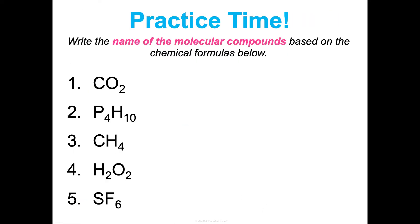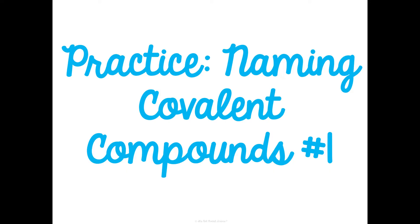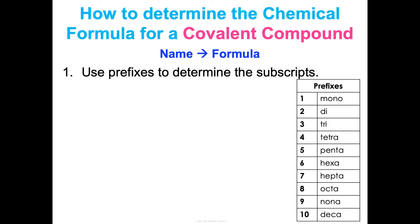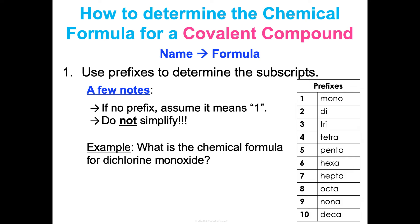I want you to try those, and then we'll go over them, and we'll do some more practice in class too. And then, just for the sake of the video, we'll keep going, and let's go the other direction. So you'll just, literally, there's only one step. You use the prefixes to determine the subscripts. That is it. So whatever this says tells you how many there are of each. So a few things to note. If you don't see a prefix, you assume that means one, and then you do not simplify. So if it's P2O4, you do not reduce that to P1O2. You leave it. Because, remember, ionic we simplified because it was a ratio. This is literally telling us how many there are, so we're not going to simplify it.